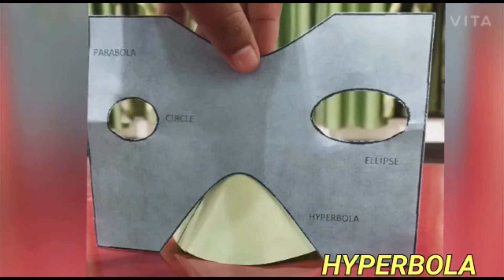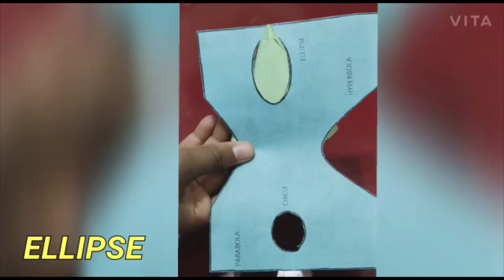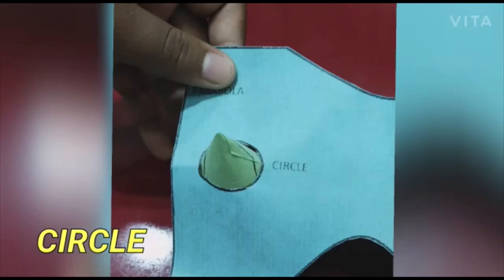And if we put the extracted part parallel to the axis of the cone, then we get a hyperbola. And if we put the extracted part inclined slightly to the axis of the cone, then we get a circle.